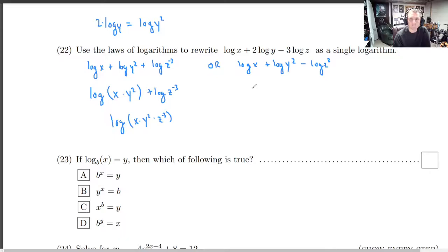But what this would mean would be over here. So this is log of x times y squared minus log of z cubed.